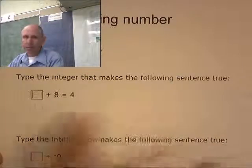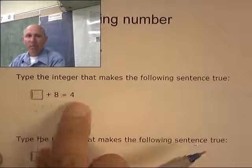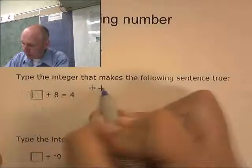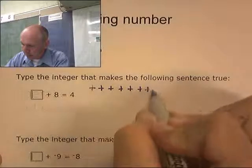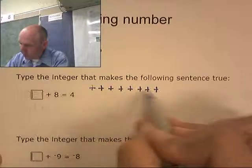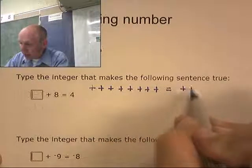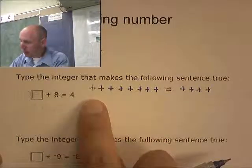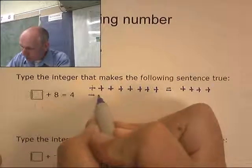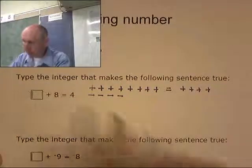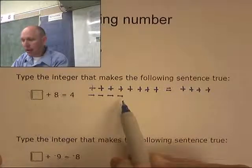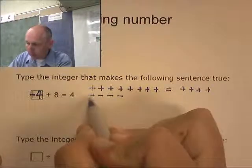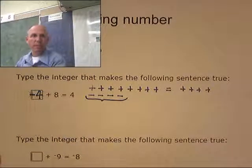Type the integer that makes the following sentence true. I need to put a number in here that when it adds with an 8, I'm going to end up with a 4. I have 8 positives. When it's done, I should only have 4 positives. So how can I get rid of 4? I need to get rid of 4 of these — so a minus, a minus, a minus, a minus. 8 positives and 4 negatives gives me a total of 4 positives. So this is going to be negative 4. That's what I'm adding to make this work — negative 4.